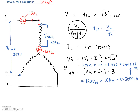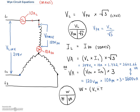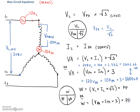That same equation for wattage still holds true. Remember that in the background, power factor equals watts over VA. So if we want to find wattage, we take VA — that's V_line times I_line times root 3 — and multiply by our power factor to get our wattage. Or using phase values, watts equals V_phase times I_phase times 3, multiplied by our power factor. Both will provide us with our wattage.